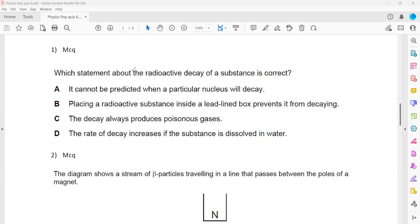When we check the option, it cannot be predicted when a particular nucleus will decay. This is true because it's a random process. When we say it's random, there is no order. We cannot predict when the next atom will decay. This is the right statement.